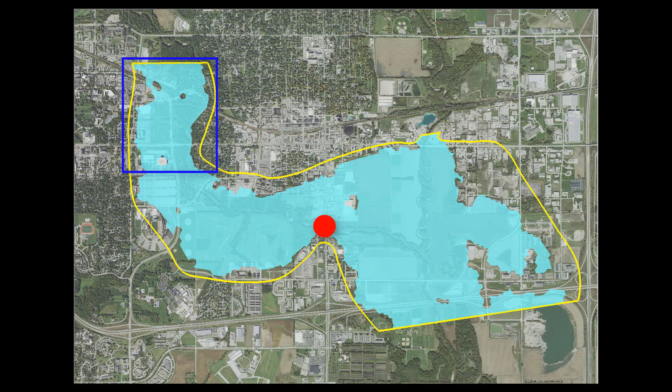In this example, the coarse model limit shown for the western river could be adjusted to reduce the model size.